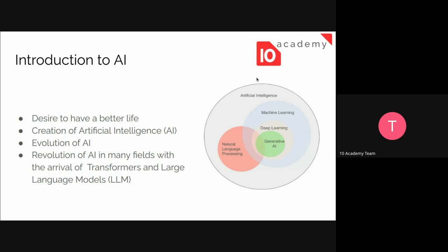Machine learning has some limitations, and to overcome those limitations they thought of creating another subset called deep learning. Deep learning introduced an artificial neural network that mimics the human brain, and focuses on training computers with a lot of data. In this case it is able to learn and recognize complex patterns that traditional machine learning techniques cannot learn from data.